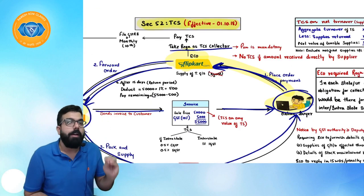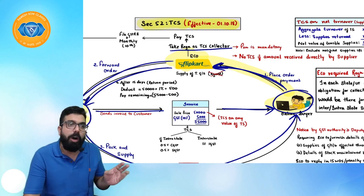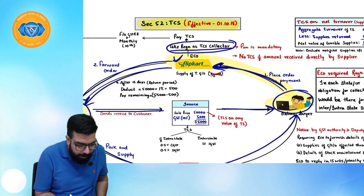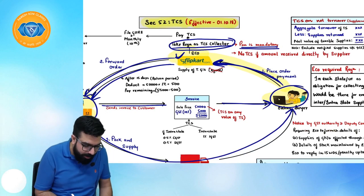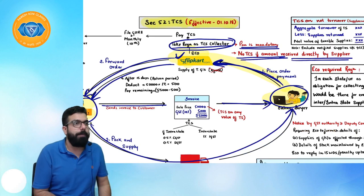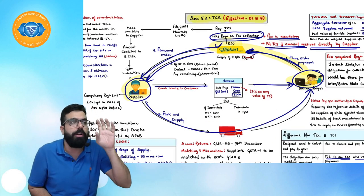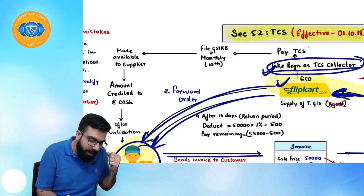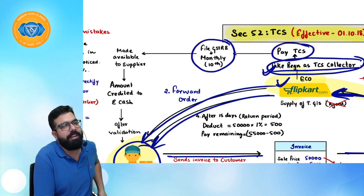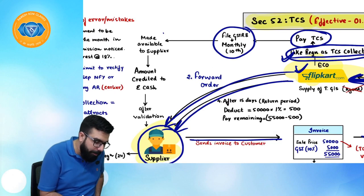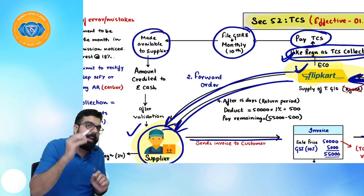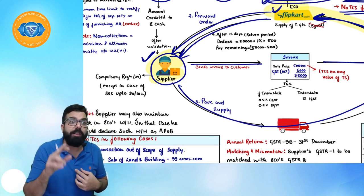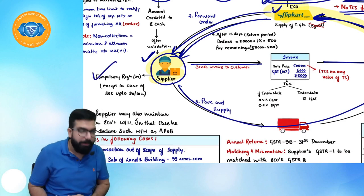To pay TCS to the government, the e-commerce operator must take compulsory PAN-based registration. There is no TCS if the amount is directly received by the supplier — TCS applies only when payment goes through the e-commerce operator. The e-commerce operator takes TCS registration, pays TCS, files monthly return GSTR-8 by the 10th of the next month. The amount is then made available to the supplier, who validates it, and it is credited to the supplier's e-cash ledger. The supplier must also take compulsory registration.